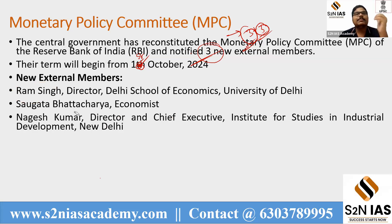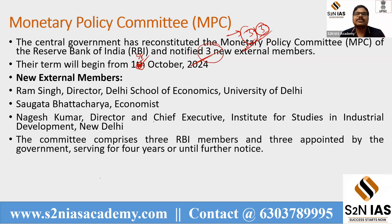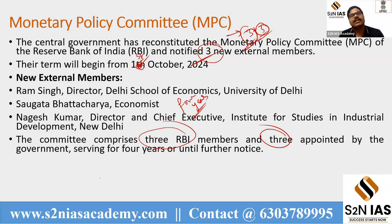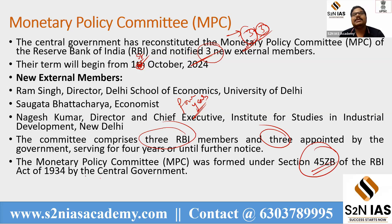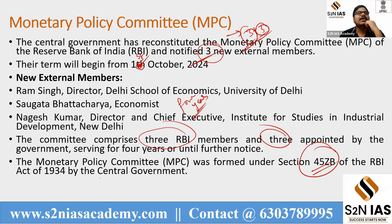So these three external members — Ramsing, Kutabattacharya, and Nagesh Kumar — were recently appointed to the Monetary Policy Committee. The committee comprises three members from the RBI and three members appointed by the government, each serving a four-year term. The committee was formed under Section 45ZB of the RBI Act of 1934 by the central government.